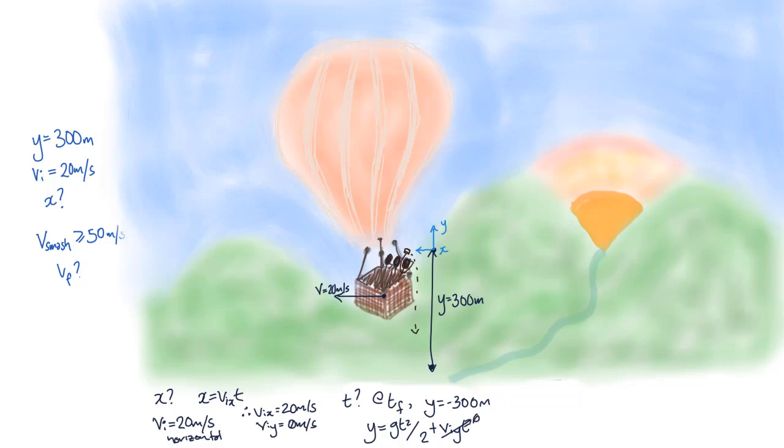We get y = (1/2)gt². We know that both y and g are acting downwards, so they're acting in the same direction and we can keep both as positive. Plugging in our numbers, we get a time to hit the ground of 7.8 seconds. We can now plug this into our equation for x.